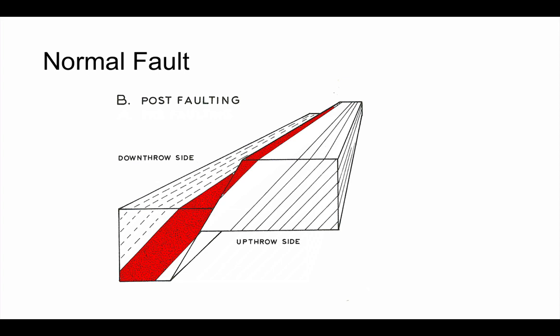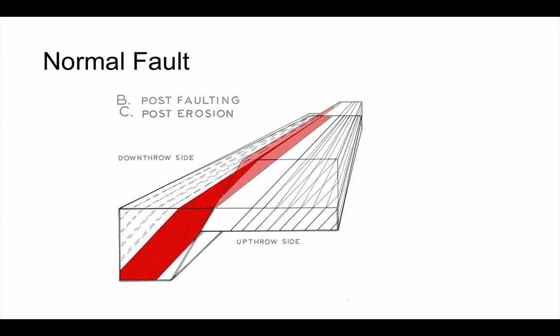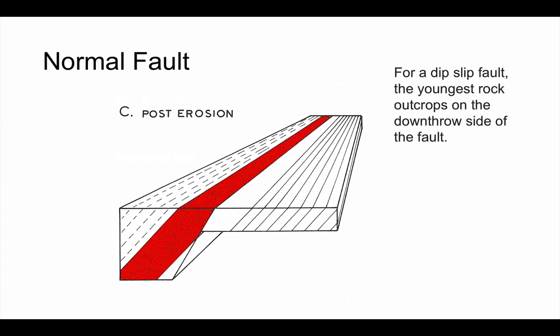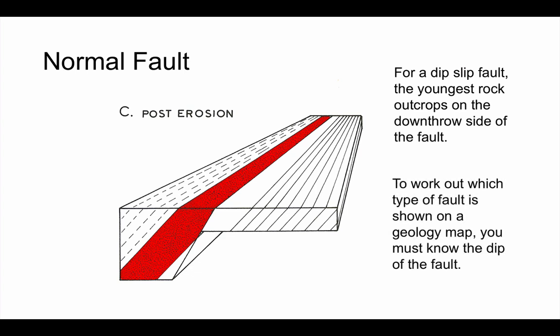This can, in very recent faults, form what we call a fault scarp, a ridge made by the fault movement. But most commonly, with ancient faults, what we see is that fault scarp having been eroded. We then see a displacement of the beds, a breaking of the beds, with different rocks either side of the fault. Now for a dip-slip fault, it's a rule that the youngest rock always outcrops on the downthrow side of the fault.